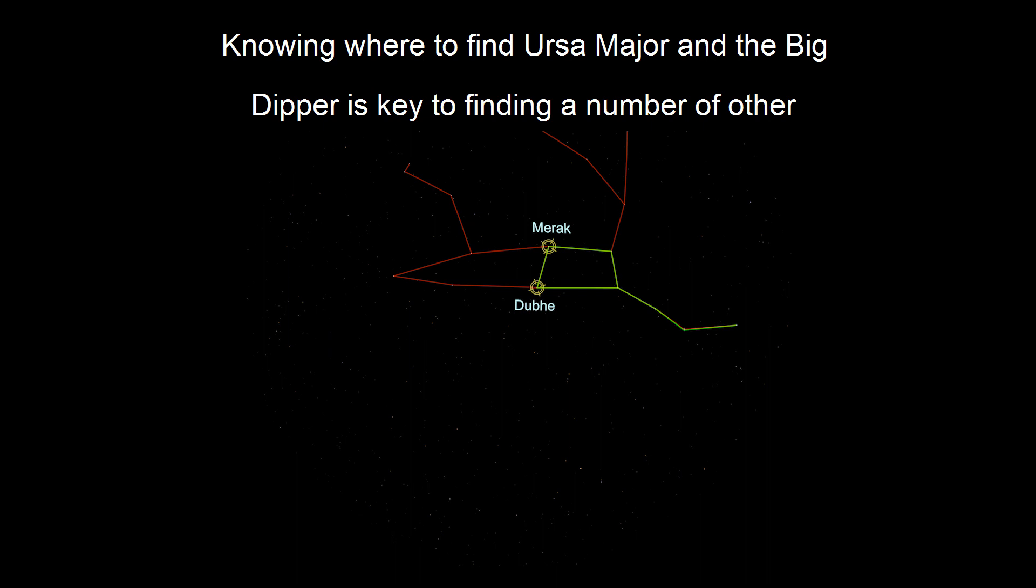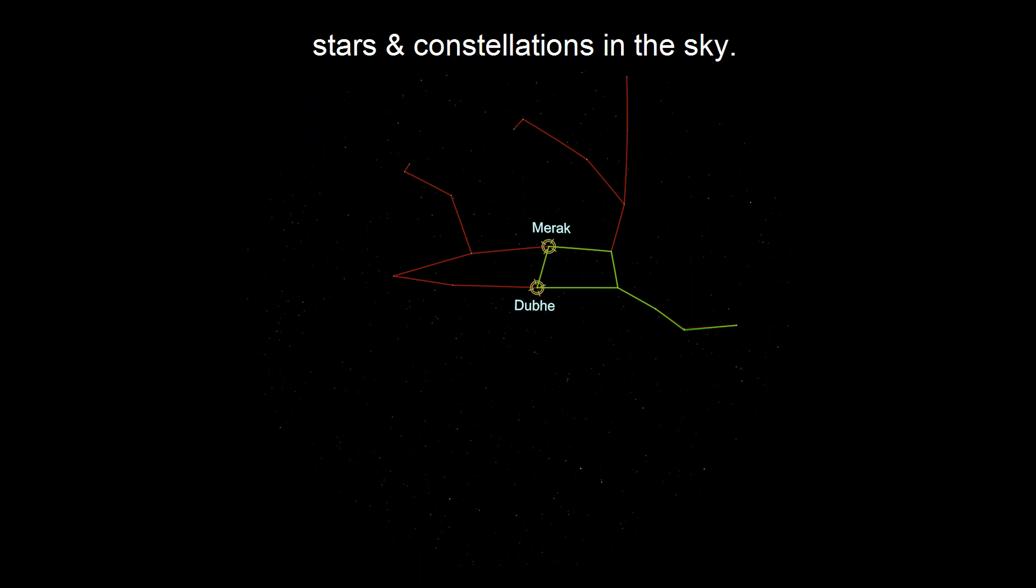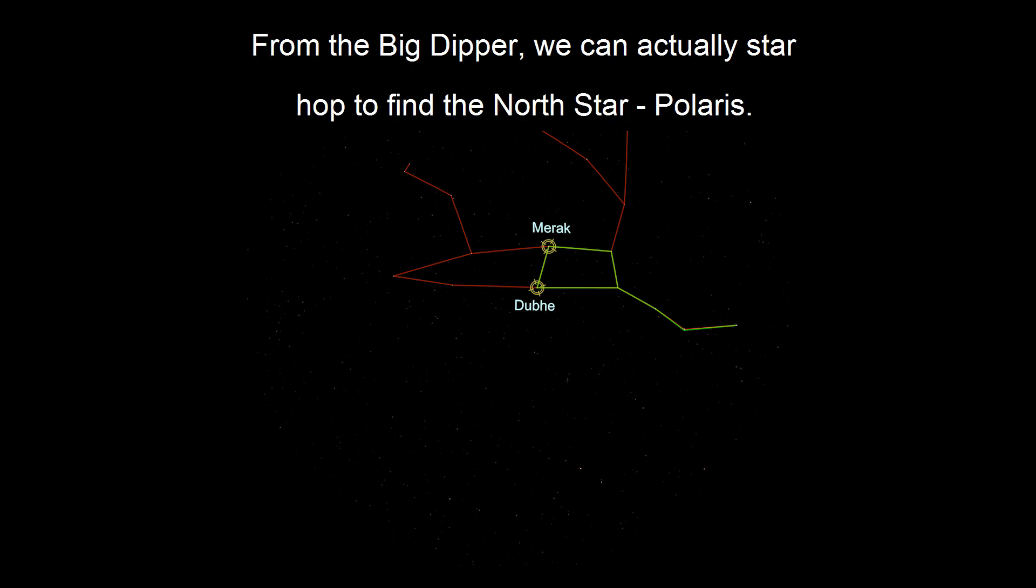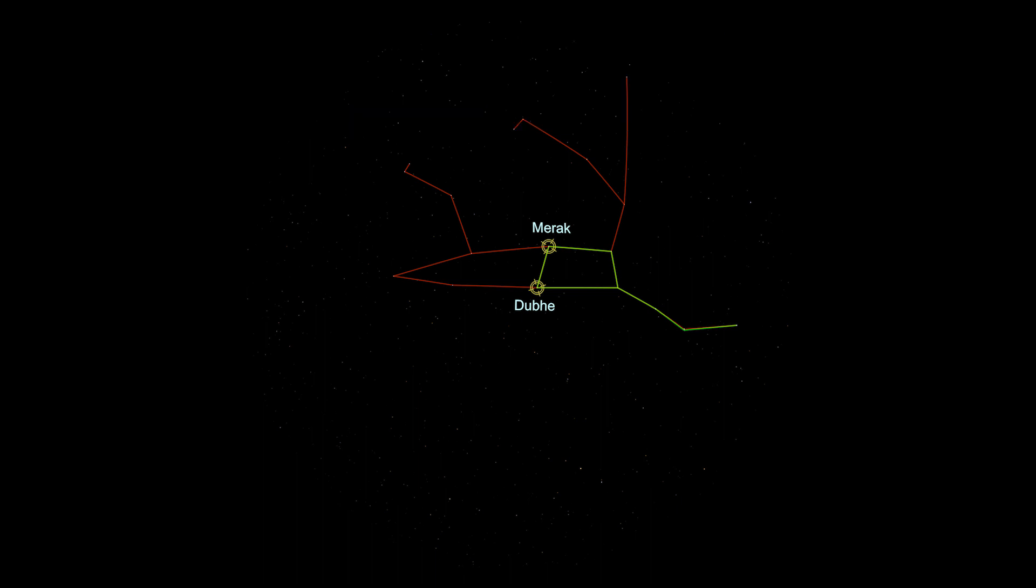Knowing where to find Ursa Major and the Big Dipper is key to finding a number of other stars and constellations in the sky. From the Big Dipper, we can actually star hop to find the North Star, Polaris.